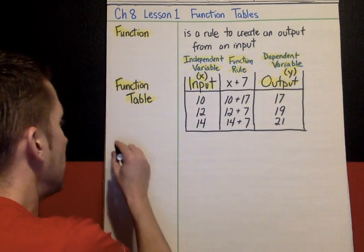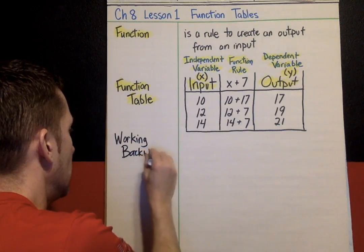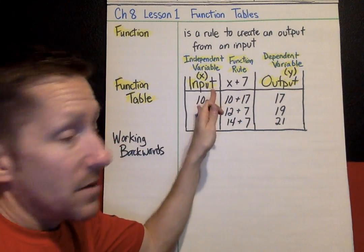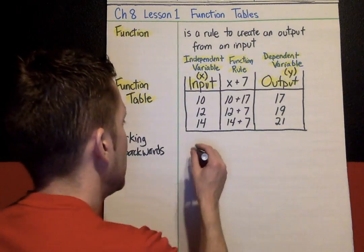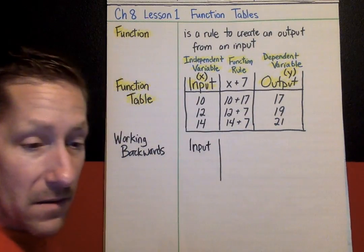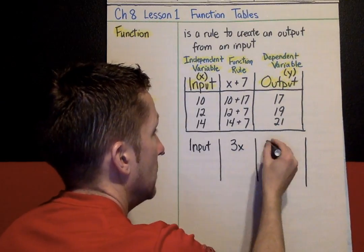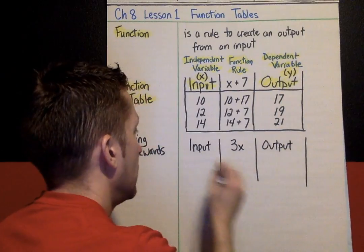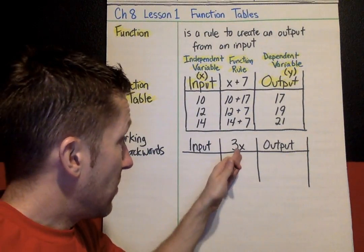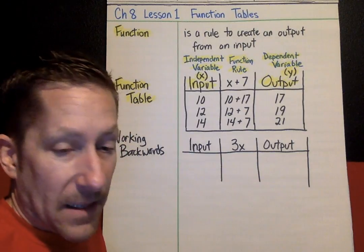Now we're going to look at working backwards. Working backwards is when you know the output, you know the rule, but you do not know the input. Let's make another table. Input. Our rule is going to be 3x. Here's our output. This time, we know the output, we know the rule, but we're going to be trying to find the input.